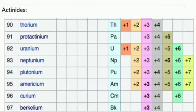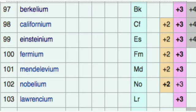In the next segment, berkelium is able to exhibit only plus 3 and plus 4. The common oxidation state in this segment is plus 3, and plus 4 oxidation state is exhibited by berkelium, californium, and einsteinium. Plus 2 oxidation state is exhibited by californium, einsteinium, fermium, mendelevium, and nobelium.